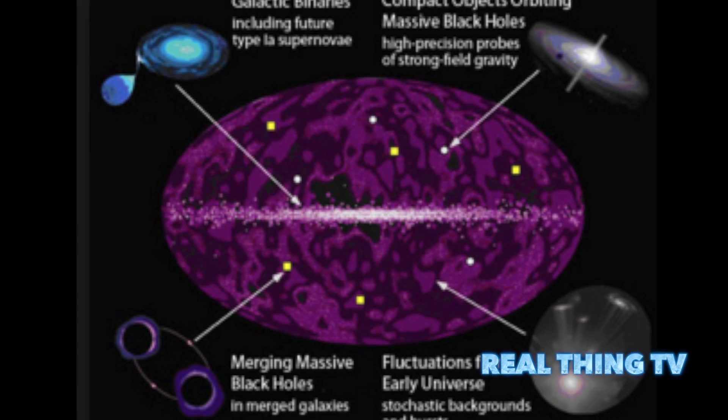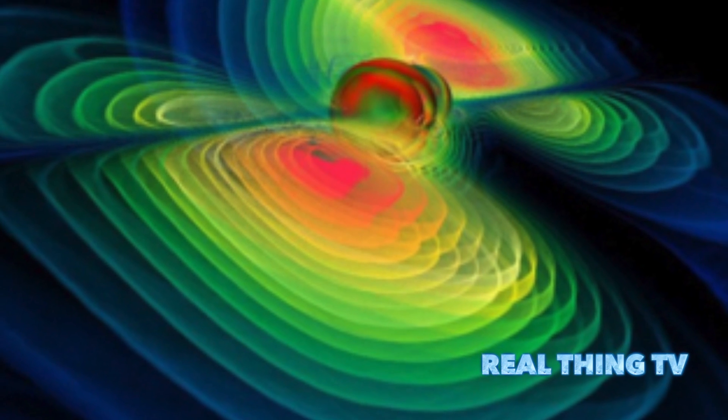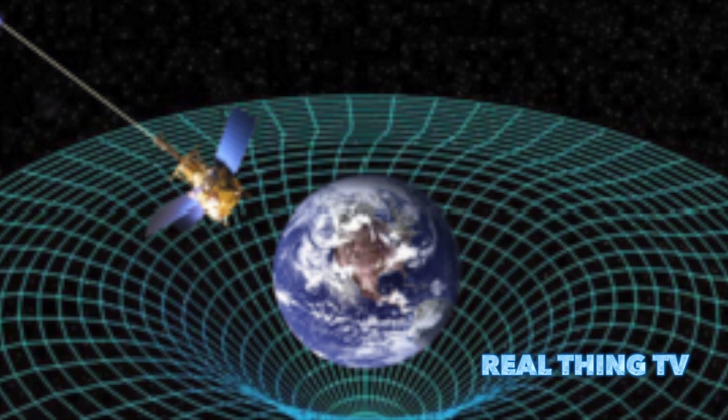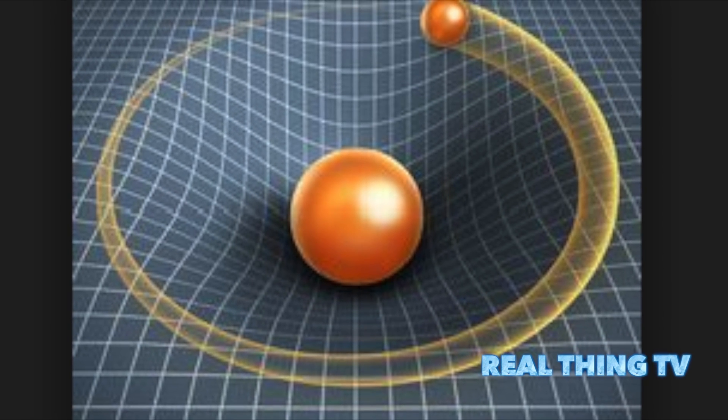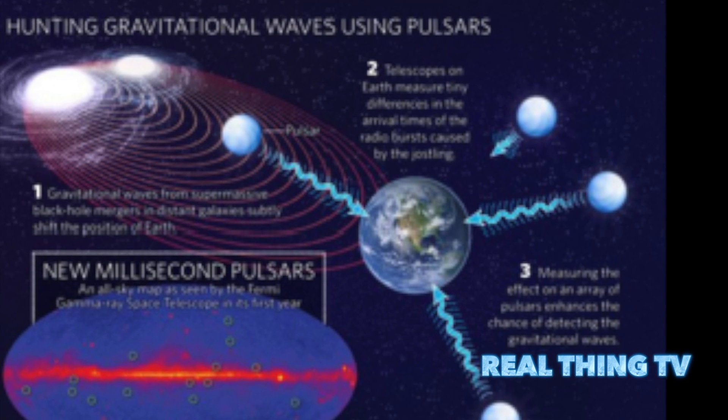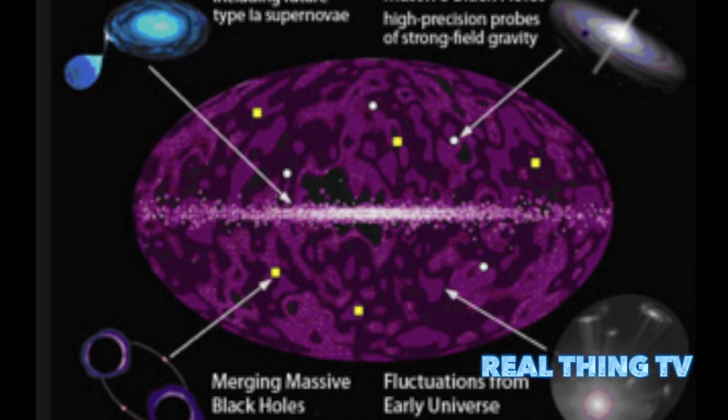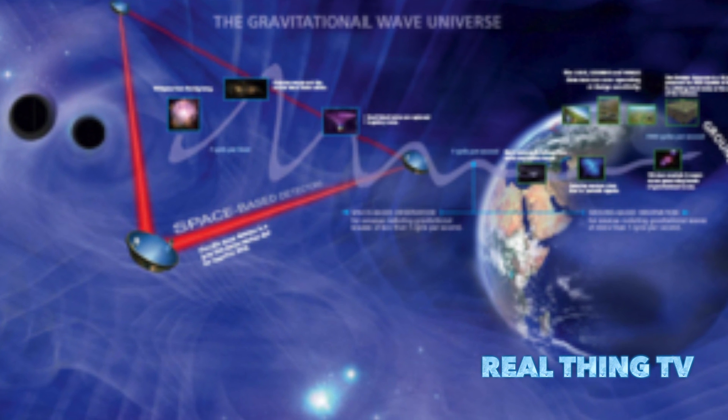The search for proof of gravitational waves has remained a focus of many scientists since Albert Einstein first theorized about the elusive phenomenon in 1915 in his theory of general relativity. Einstein believed such a phenomenon may exist but that we would never have the tools to detect them. However, technology has advanced massively since the German theoretical physicist's time.